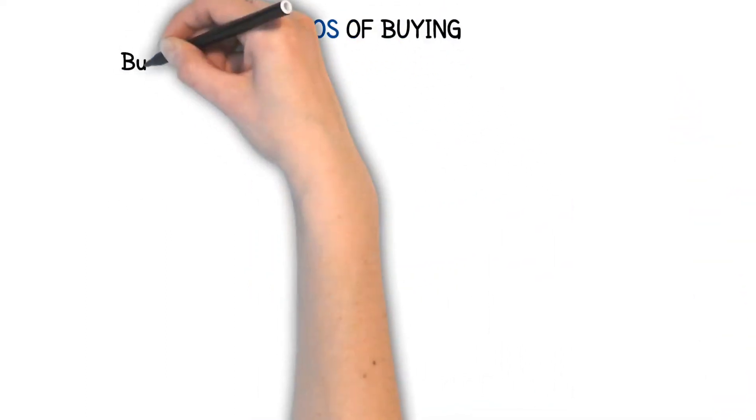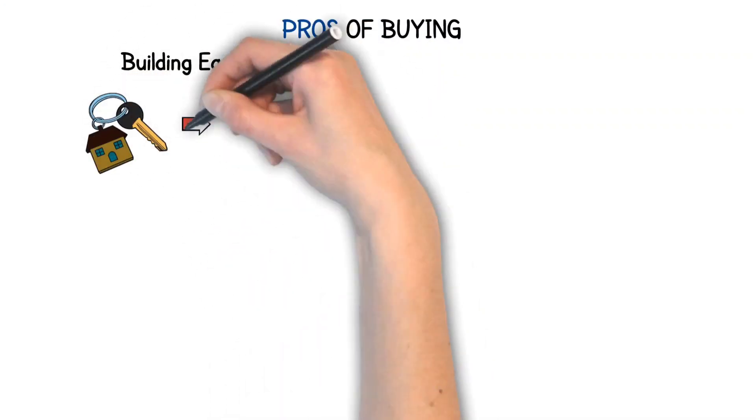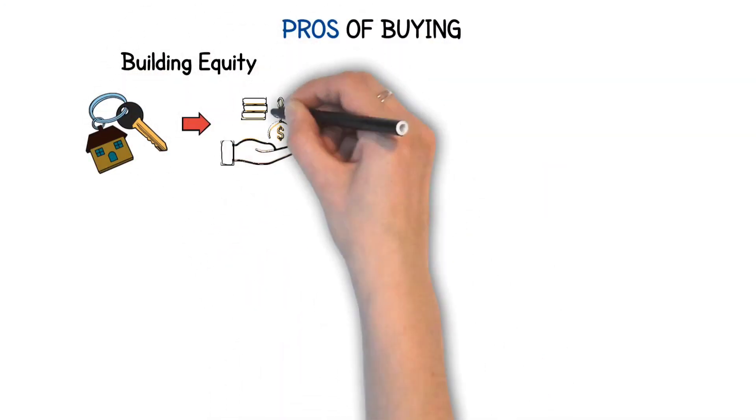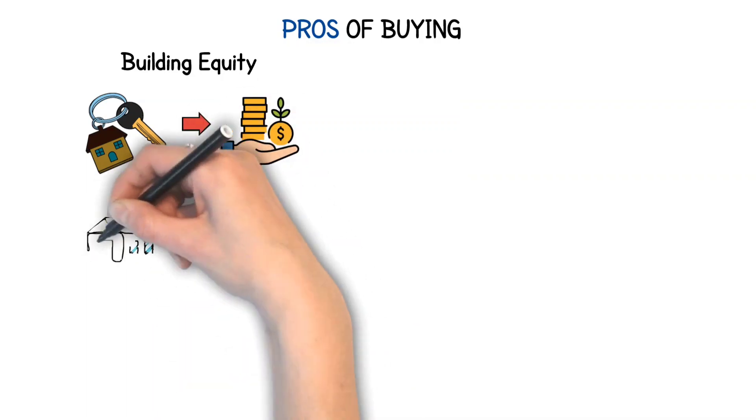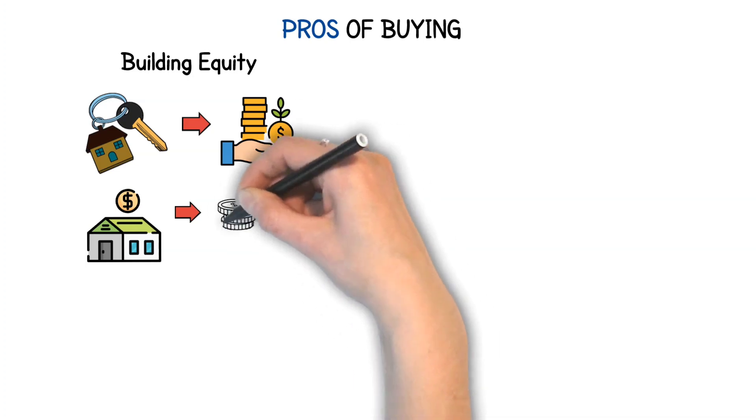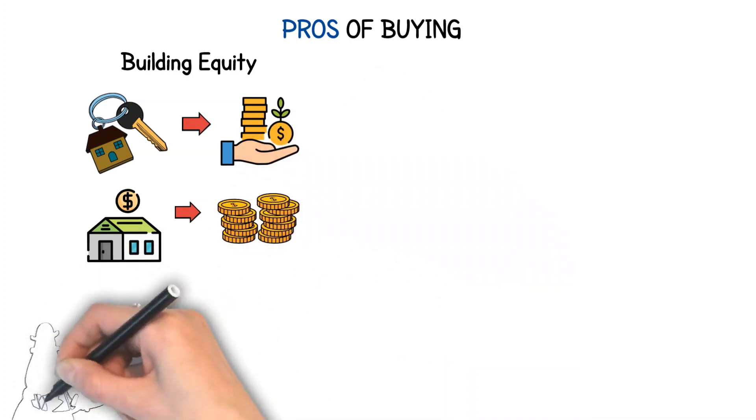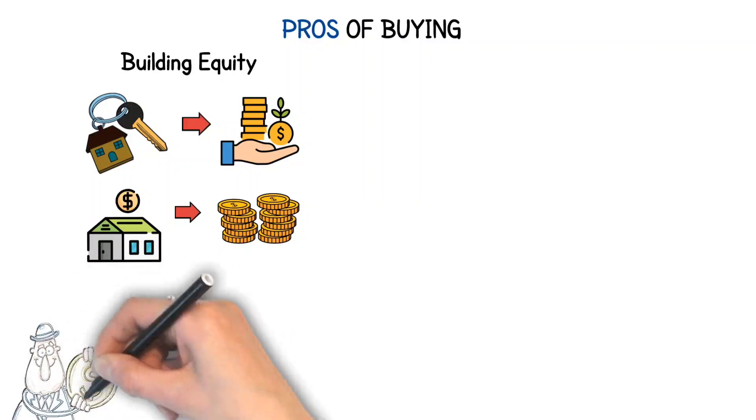First, let's talk about the pros of buying. Building equity. When you purchase a home, it's like planting a seed for a financial tree that typically grows with time. Each mortgage payment you make is like watering that tree, gradually increasing your home's equity, the portion of the house that truly belongs to you. This could turn out to be a hefty financial advantage down the line.